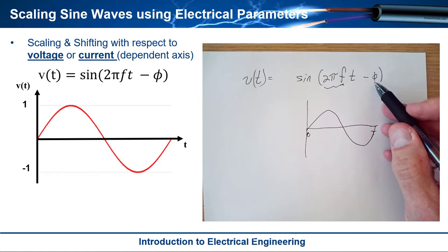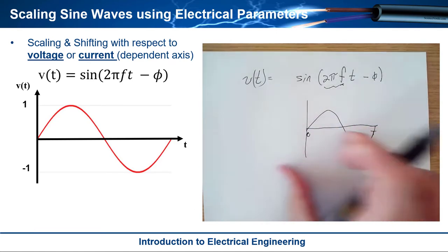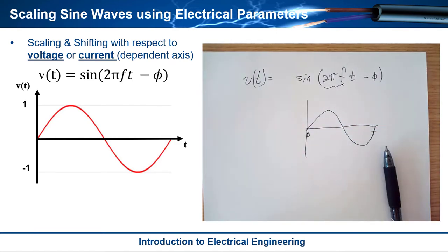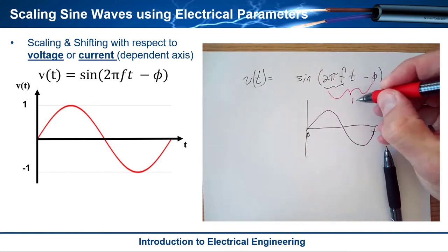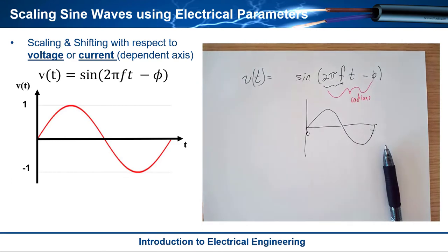And then of course phi is the offset so if it was offset in time we would apply that shift right there. And then the whole key to this is that these are in radians. Okay and that allows us to use the base sine function without putting our calculators in degree mode.